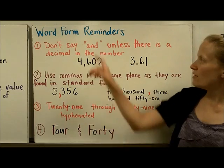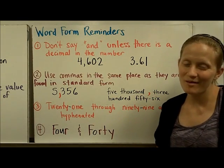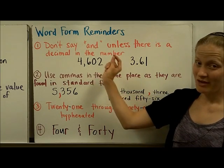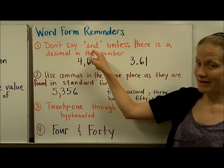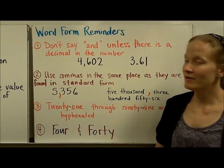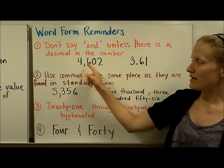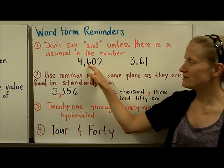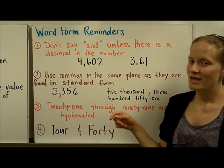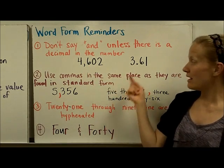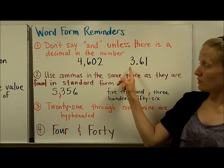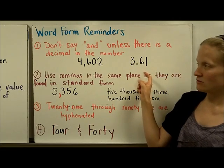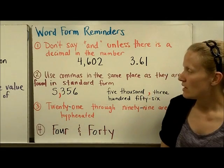A couple of reminders about word form, things that people commonly mess up. Be sure that you don't say or write the word 'and' unless there is a decimal in the number. This number right here, 4,602—lots of people are tempted to read it like 'four thousand and six hundred two,' but you only use the word 'and' if there's a decimal. For example, you would read this one: 3 and 61 hundredths. So don't say 'and' unless you see a decimal.